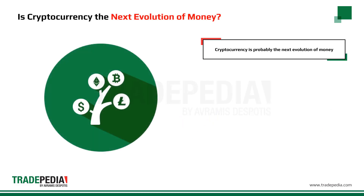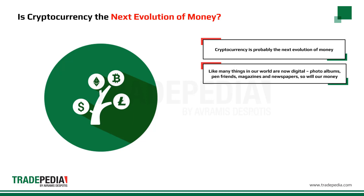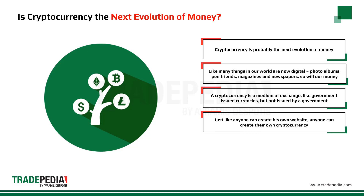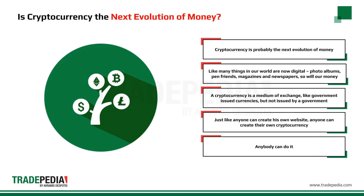Cryptocurrency is probably the next evolution of money. Like many things in our world are now digital — photo albums, pen friends, magazines and newspapers — so will our money. A cryptocurrency is a medium of exchange, like government-issued currencies, but not issued by a government. Just like anyone can create their own website, anyone can create their own cryptocurrency.